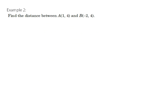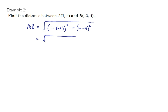Let's look at one more example. AB equals the square root of (1 minus negative 2) squared plus (4 minus 4) squared. We get 1 minus negative 2 equals 1 plus 2, so 3 squared, and 4 minus 4 gives 0 squared. So we're taking the square root of 3 squared, which gives a distance of 3.